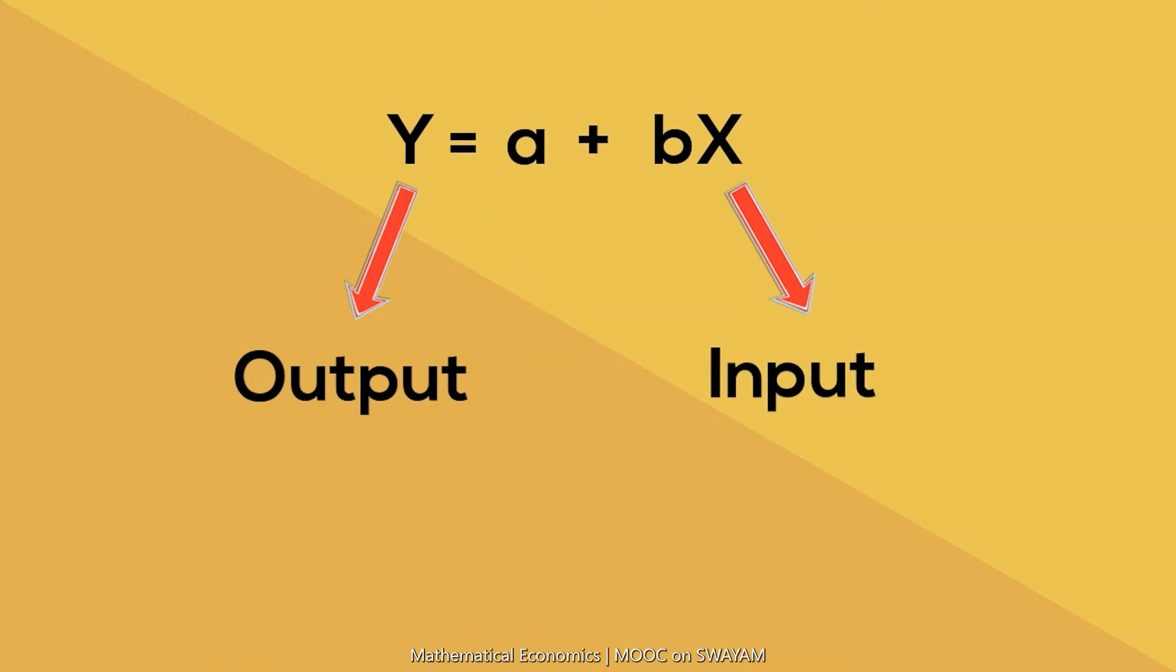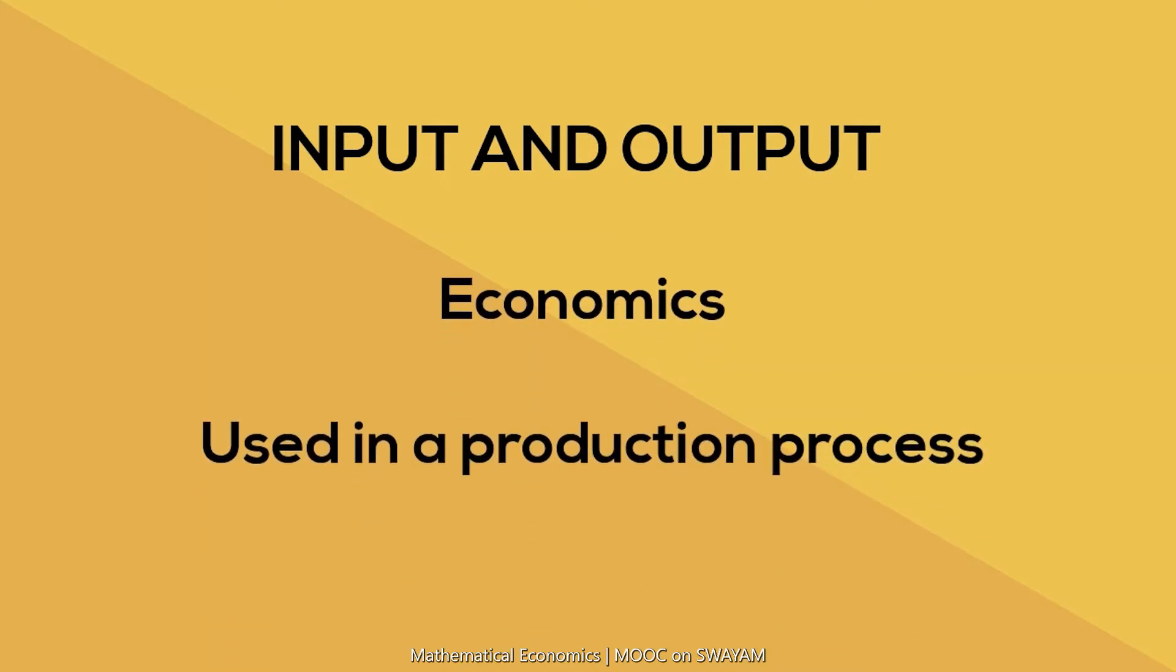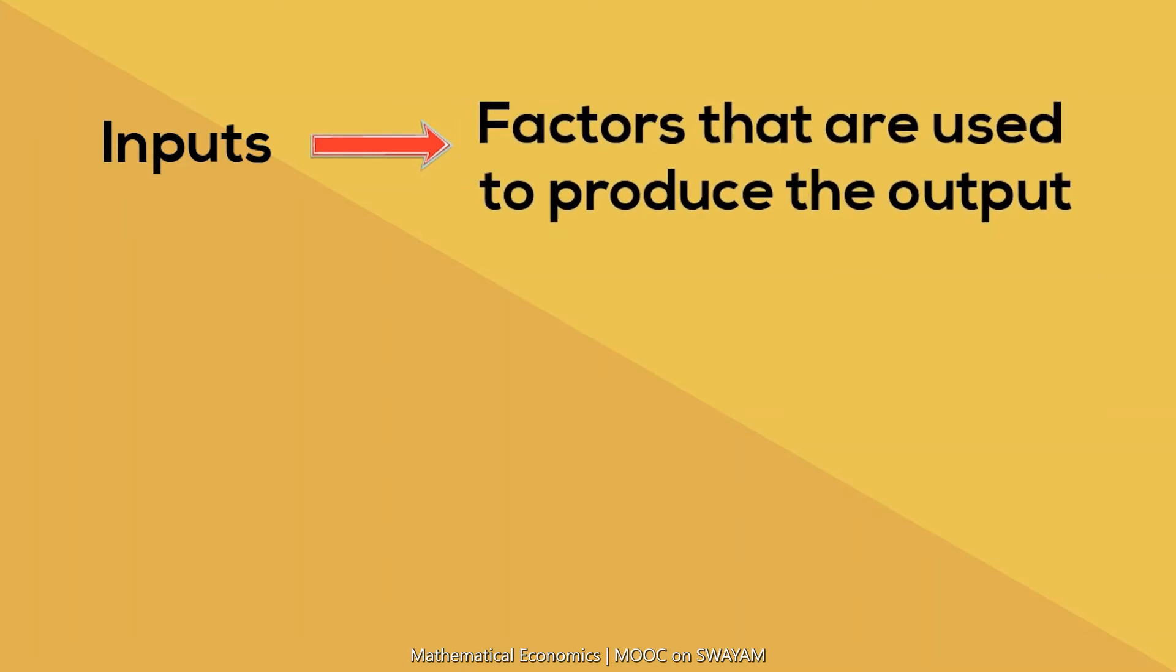The rule expressed through the function is that there is a positive relationship between the output and the input. In economics, inputs and outputs are terms used in the process of production. Inputs are the factors that are used for production or that are purchased by an industry to produce goods and commodities.